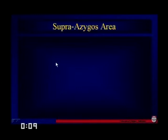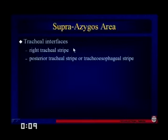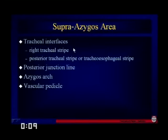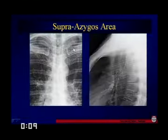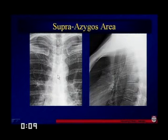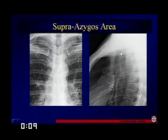The supra-azygous area contains tracheal interfaces, including the right peritracheal stripe, which really shouldn't be more than three or four millimeters across. You may see the posterior junction line, and this is where the azygous arch lives — it's also considered the venous pedicle of the heart. The right peritracheal stripe shouldn't be more than three or four millimeters, should be well-defined. You can see the posterior peritracheal stripe and a clear anterior mediastinal compartment.